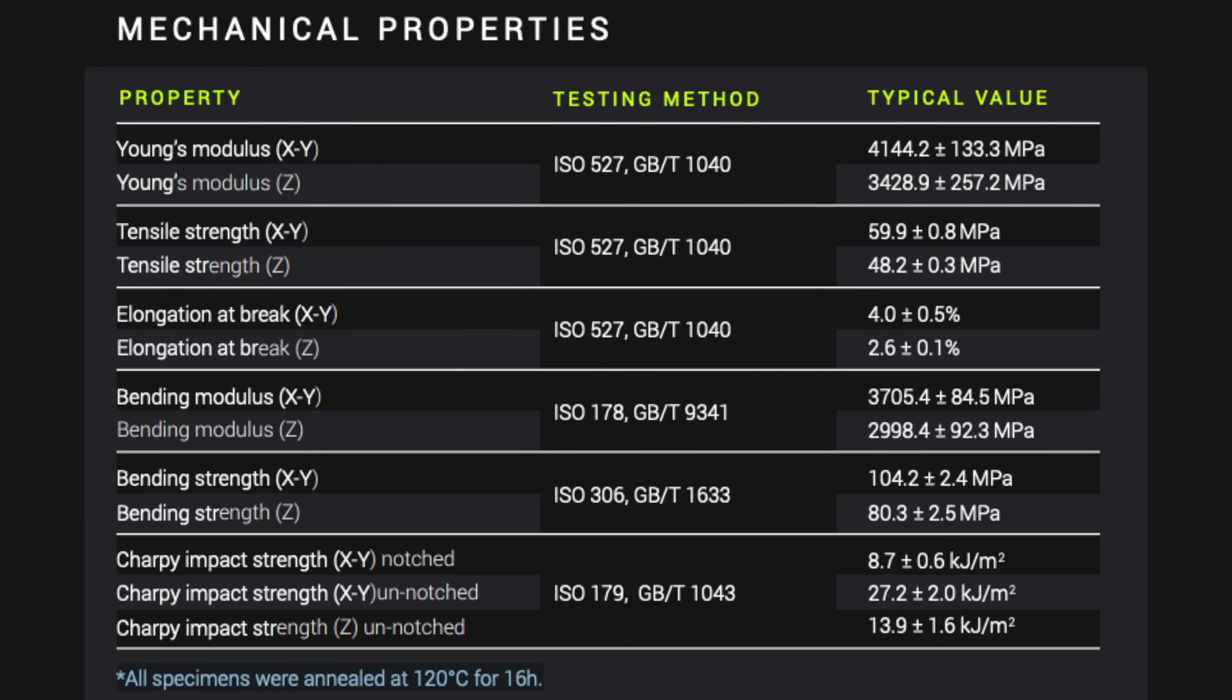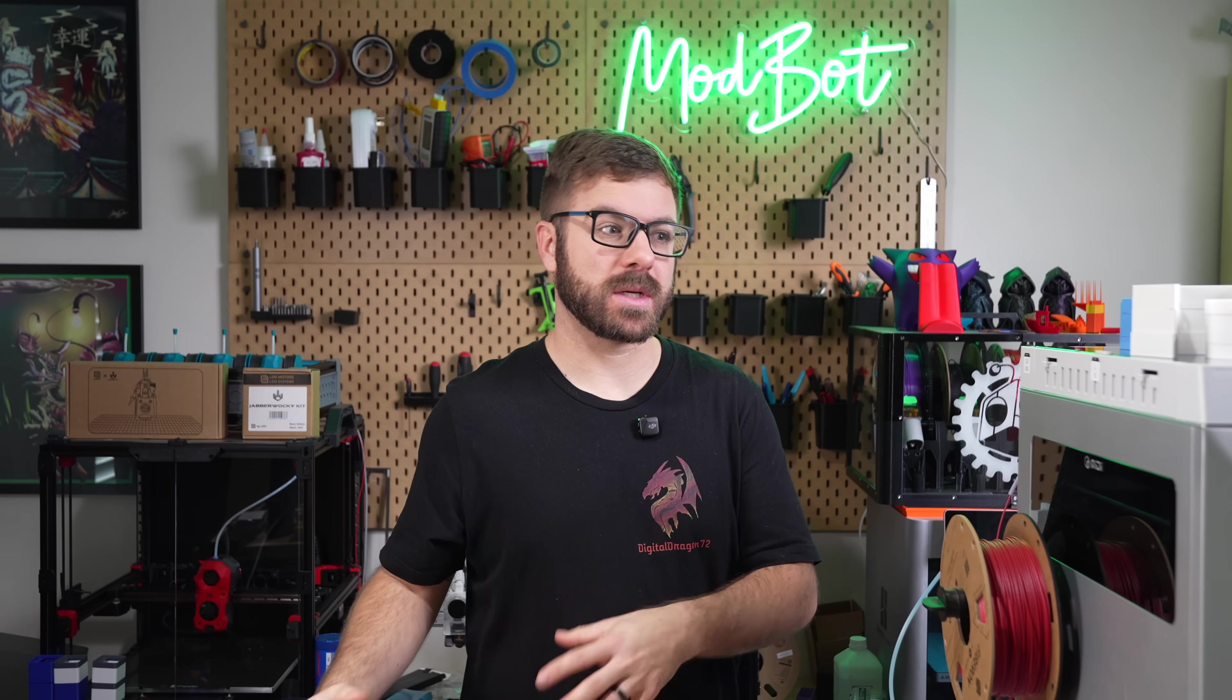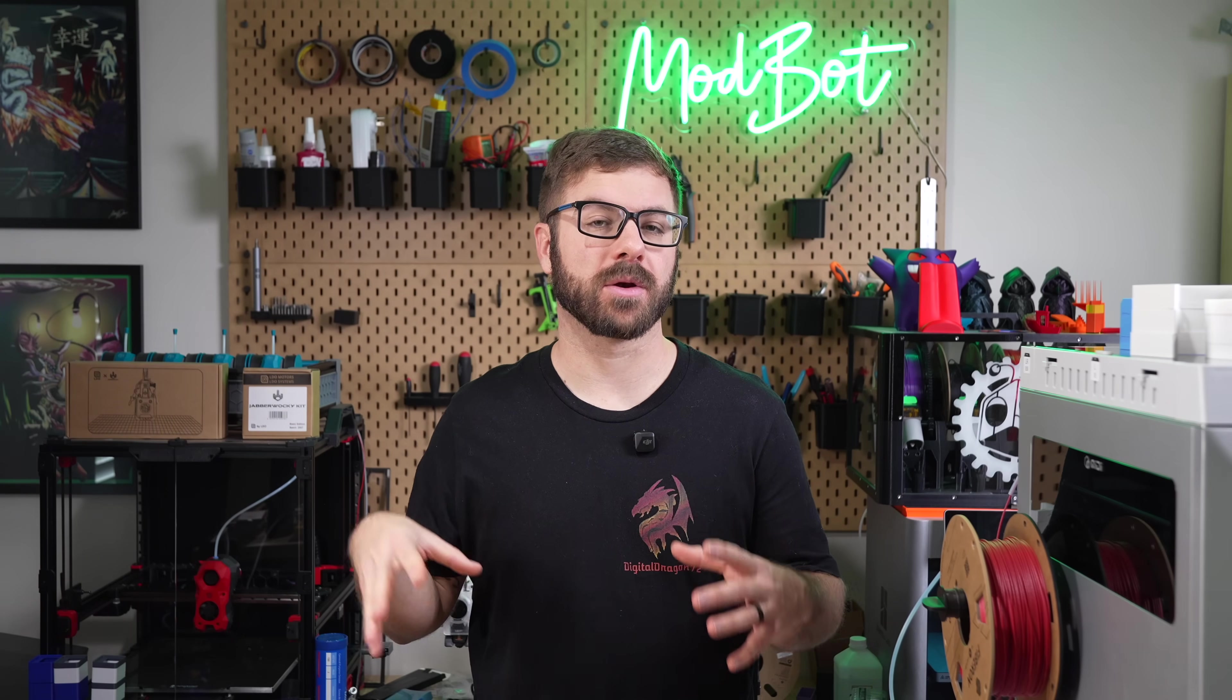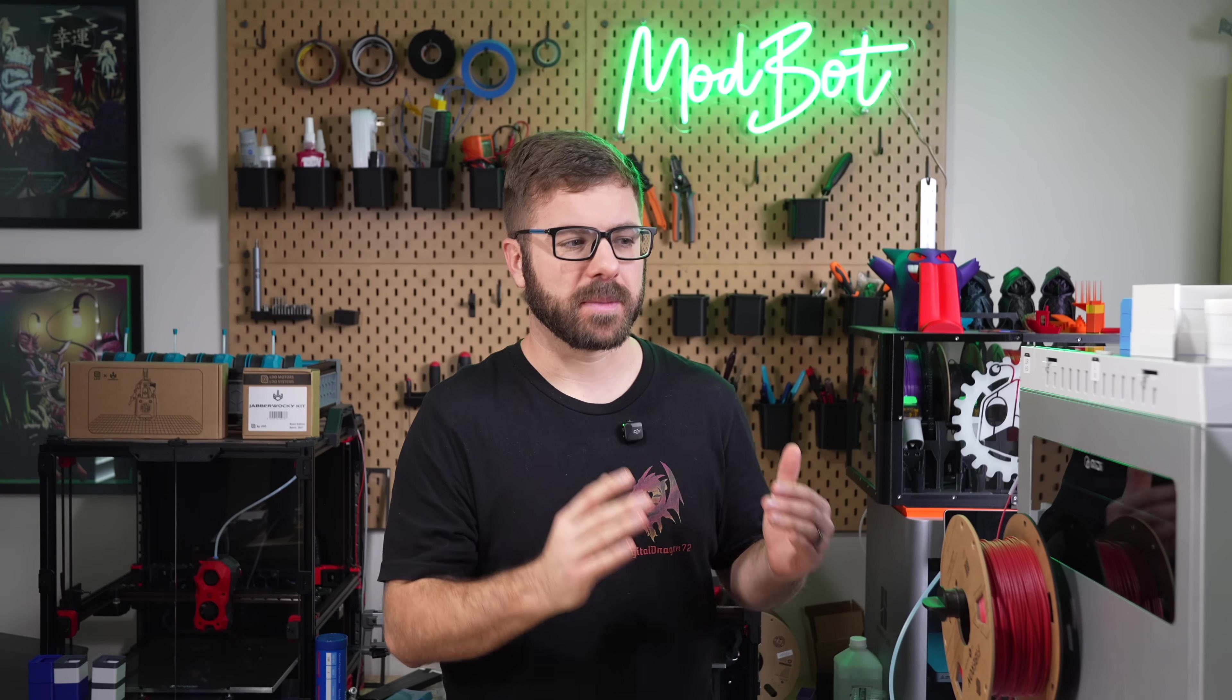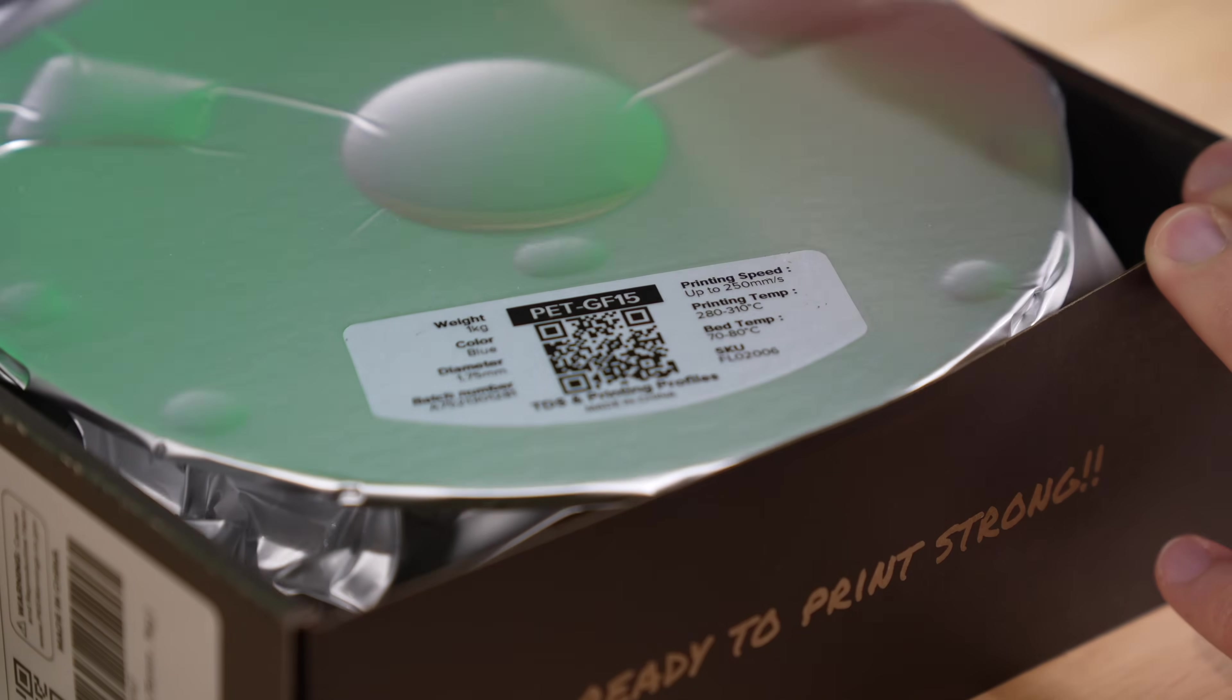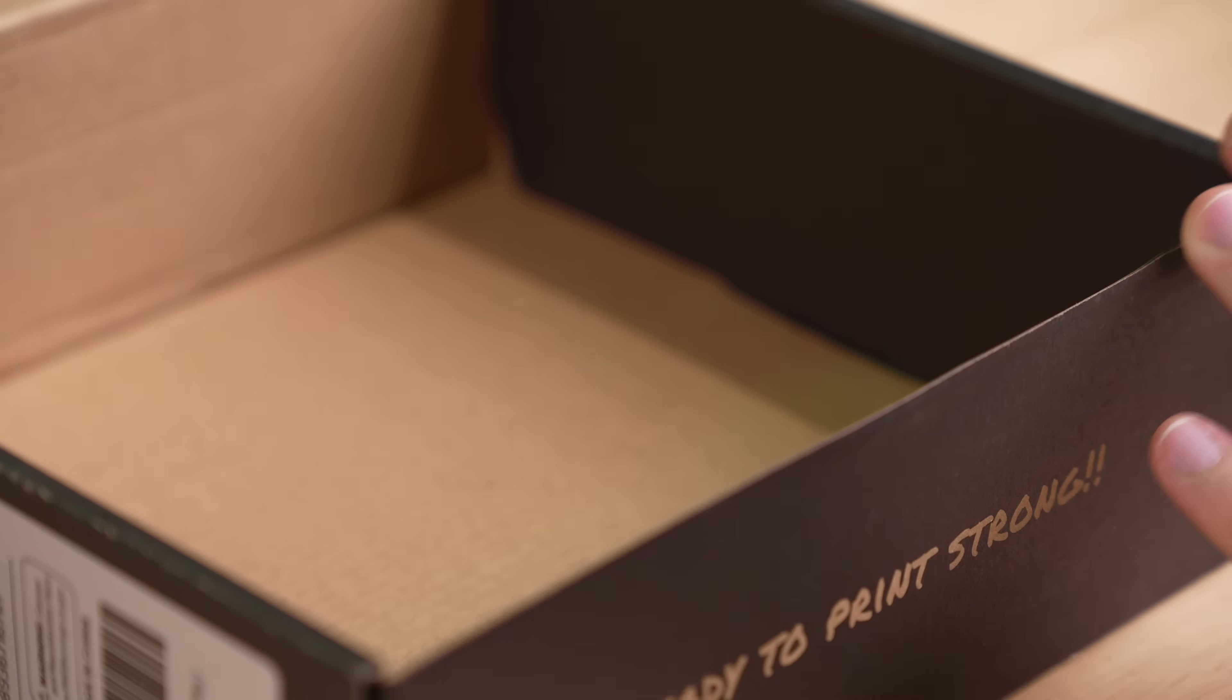For the mechanical properties, it would have been nice to have both the tests done for parts straight off the printer as well as annealed, but based off this TDS and the previous one I saw, I can only assume that this is a filament that greatly benefits from annealing. Let's move on to what's required to print with this material.